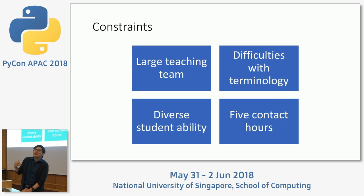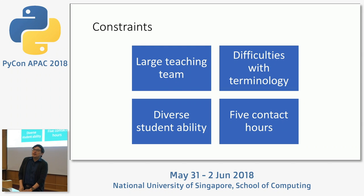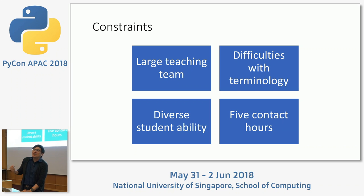Another challenge was the difficulty in terminology in the machine learning field. If you pick up three different textbooks, you'll find they use different terms to refer to the same thing. For example, one book may use the word 'variable' to refer to a column of data, and another calls it a 'feature.' For a row of data, one book calls it a 'record,' another calls it a 'row,' and another calls it an 'instance.' We had to consider very carefully what terminology we were going to use.